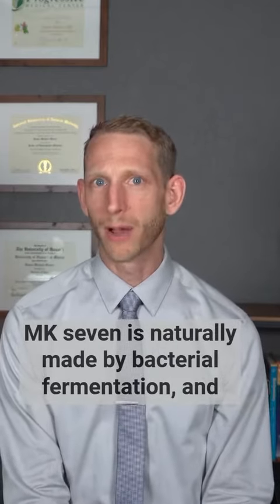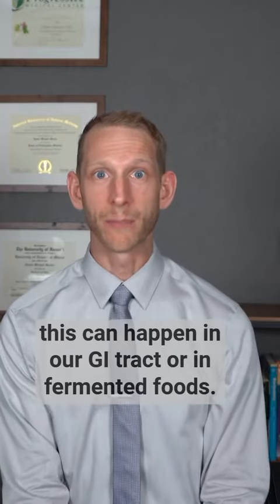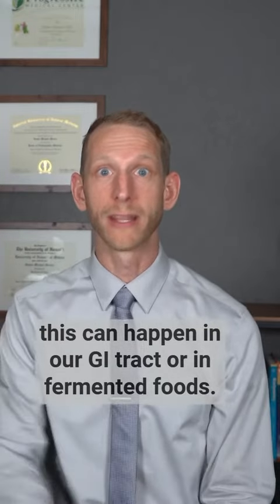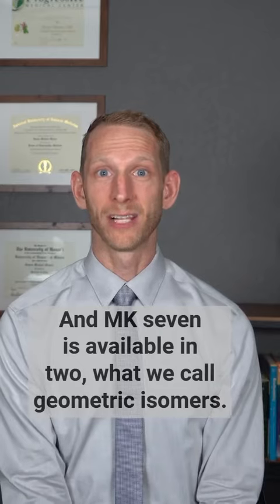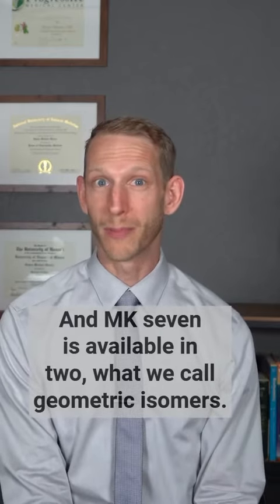MK7 is naturally made by bacterial fermentation, and this can happen in our GI tract or in fermented foods. And MK7 is available in two what we call geometric isomers.